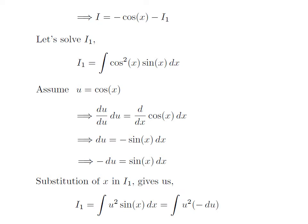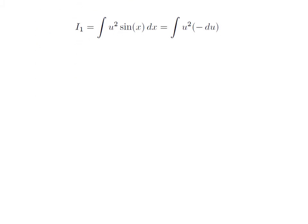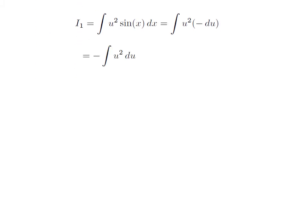Substituting cos(x) in integral I1 with our assumed value u, I1 becomes the integration of u² · sin(x) dx. Since sin(x) dx is equal to -du, substituting gives us I1 is equal to the integration of u² · (-du). Taking the minus out, I1 is equal to minus the integration of u² with respect to u.